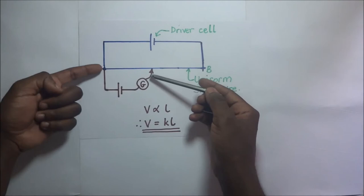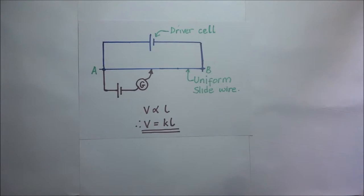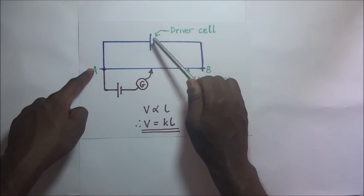A potentiometer consists of a uniform slide wire, and this slide wire can be of any length — it can be one meter long, it can be more than one meter long. This slide wire is connected in series with a driver cell, and this driver cell is responsible for ensuring that there is a constant flow of current through this slide wire.